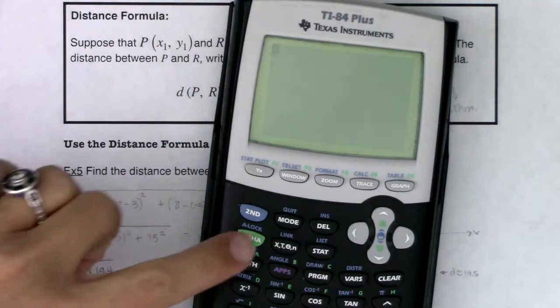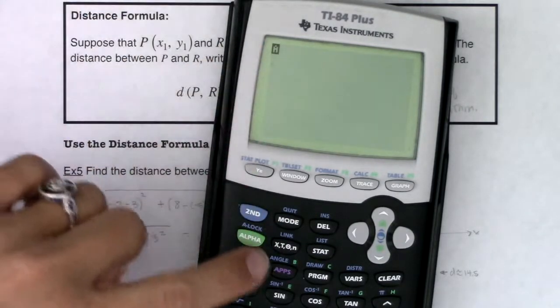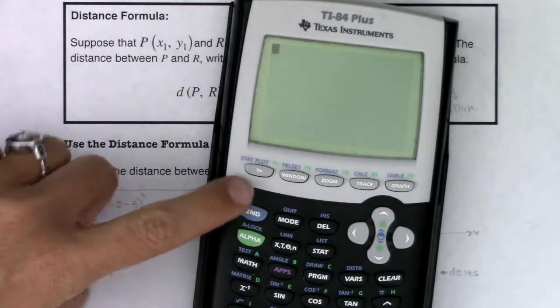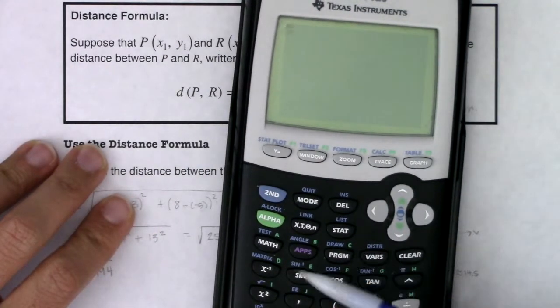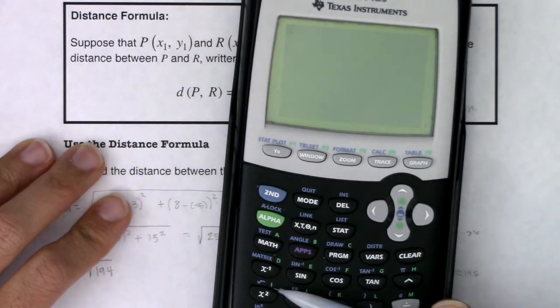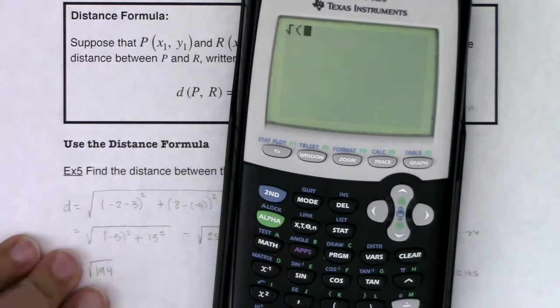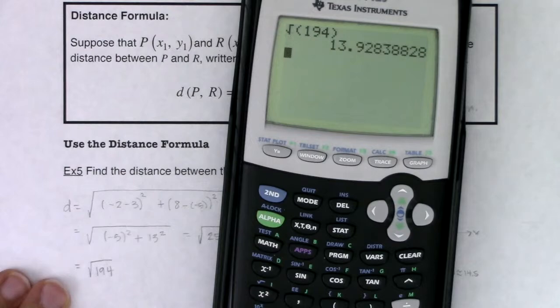And again, if I hit alpha, we can see the A showing up and I get D there. Alright, that's all fine and good. I need to still get to the square root of 194. So I'm going to hit the second key, because my square root button is right above that x squared key. So I'm going to hit second and x squared. And let's type in 194. And when I hit enter.